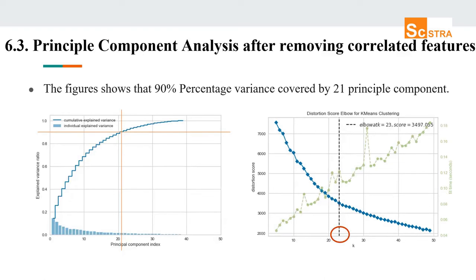Finally, the same principal component analysis was applied after removing correlated features, using the same correlation-removal technique from the first approach. Here we can see that 90% variance is covered by 21 principal components. These 21 principal components were then used to define the optimal number of clusters, resulting in 23 clusters.